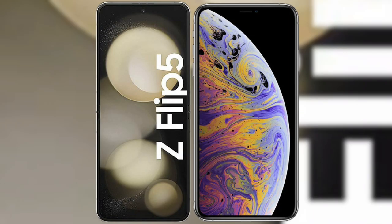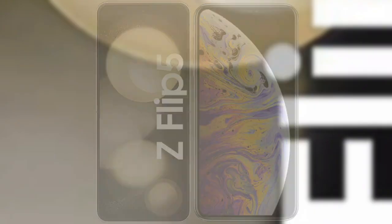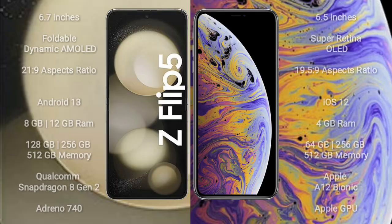I will compare the new Samsung Galaxy Z Flip 5 with the iPhone XS Max. The Samsung Galaxy Z Flip 5 comes with a 6.7-inch foldable Dynamic AMOLED display with an aspect ratio of 21:9. The iPhone XS Max comes with a 6.5-inch Super Retina OLED display with an aspect ratio of 19.5:9.